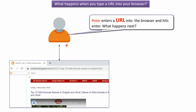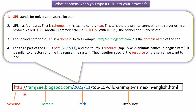This video tutorial will explain what happens when you type a URL into your web browser. Here you can see a person called Peter who enters a URL into the browser and hits the enter button. Before we see what happens, let's look at what a URL is. URL stands for Universal Resource Locator.